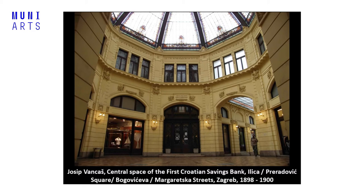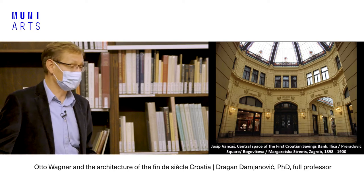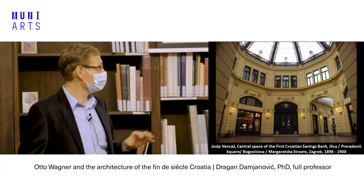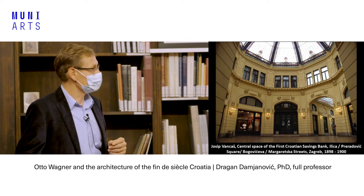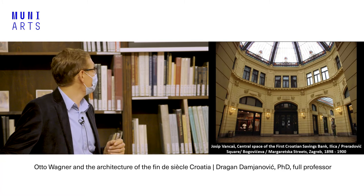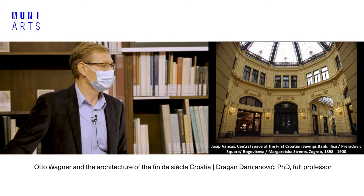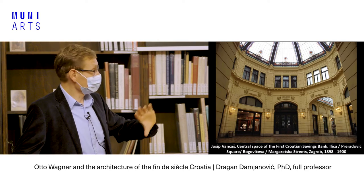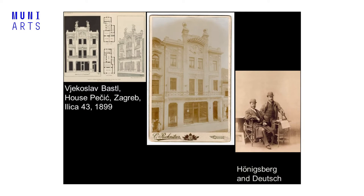A similar combination of Art Nouveau with perhaps neo-Renaissance can be seen on the facades of the first Croatian savings bank in the center of Zagreb, designed by Josip Pancac, a Croatian architect who lived and worked mostly in Sarajevo in Bosnia-Herzegovina. Those works from around 1898, when the Art Pavilion was completed, mark the years when Art Nouveau appeared in Croatian architecture. But all of those works still contain some elements of historical style — making Bastl's building the first considered by Croatian art historians to be a 'real' Art Nouveau building.